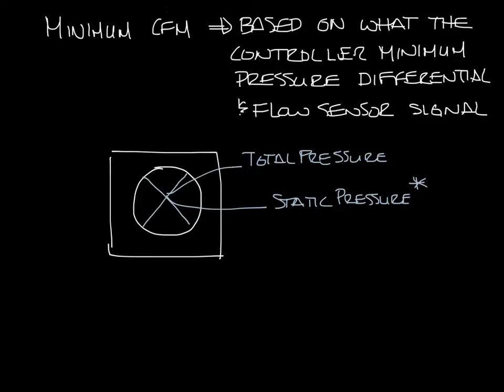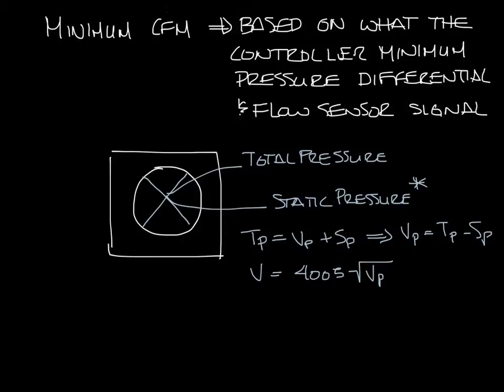The idea is that total pressure equals velocity pressure plus static pressure, or said another way, velocity pressure equals total pressure minus static pressure. So if you can know your total pressure and static pressure, you can calculate velocity pressure. You can use that to calculate velocity which is 4005 times the square root of velocity pressure, and then calculate CFM which is velocity times area.